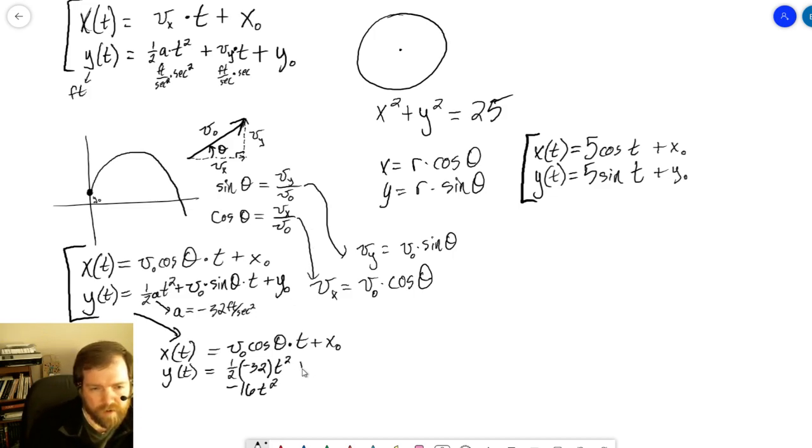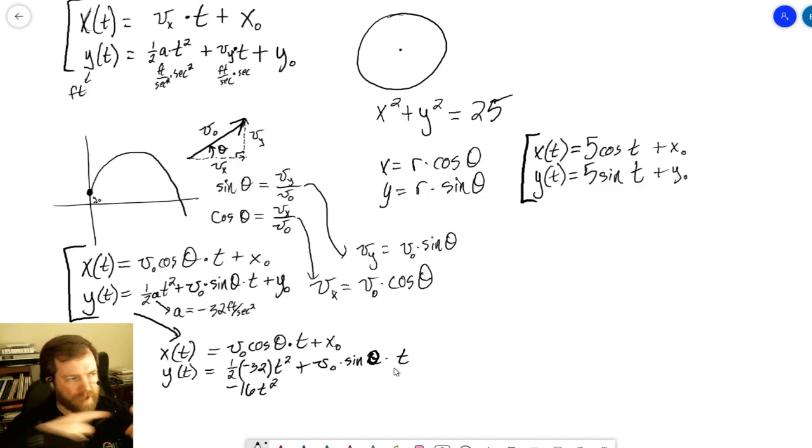And then, plus your v0 sine of theta t. And it should be noted, I think you've probably got this already, but theta and t are not actually multiplied together, right? They're sine of theta as a term, and then t is a separate term. But, you know, I want to cover all my bases.